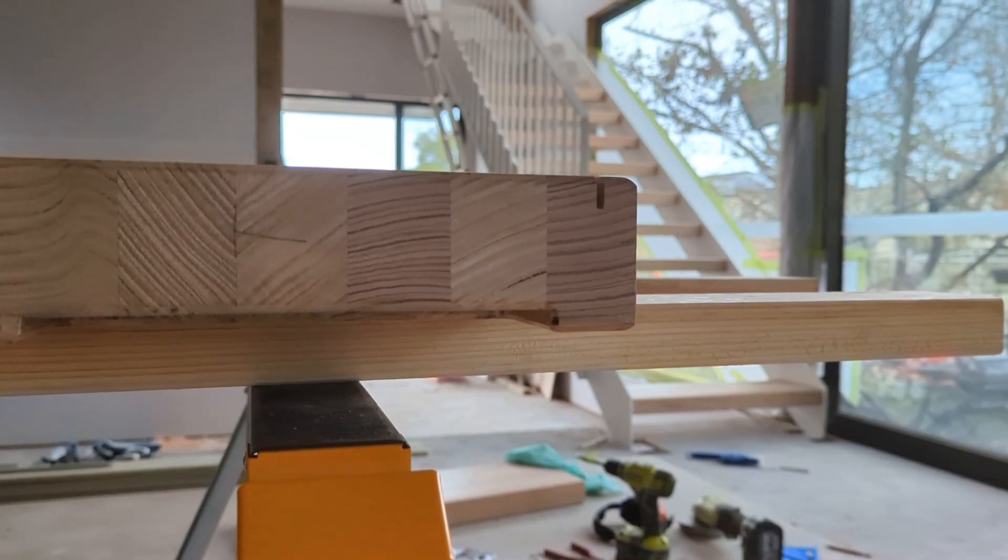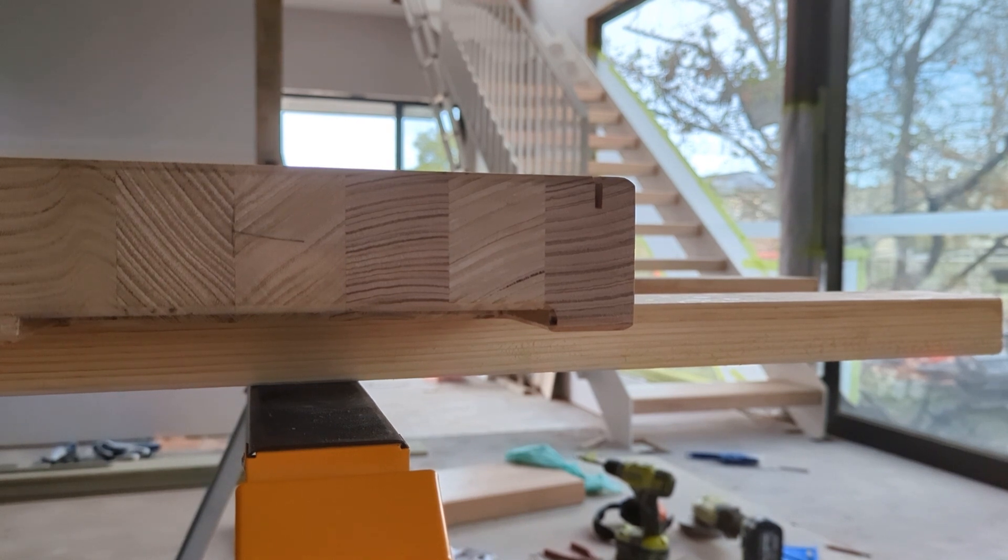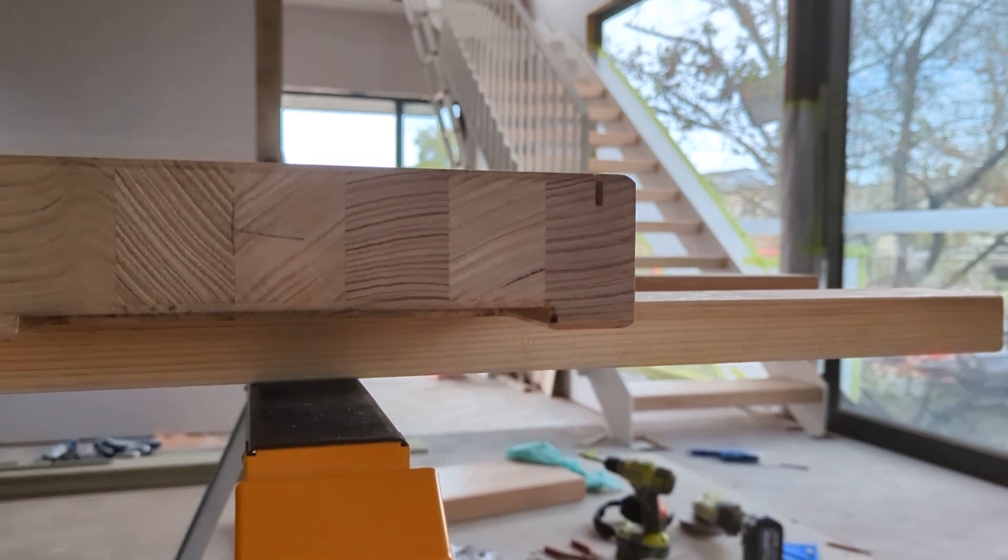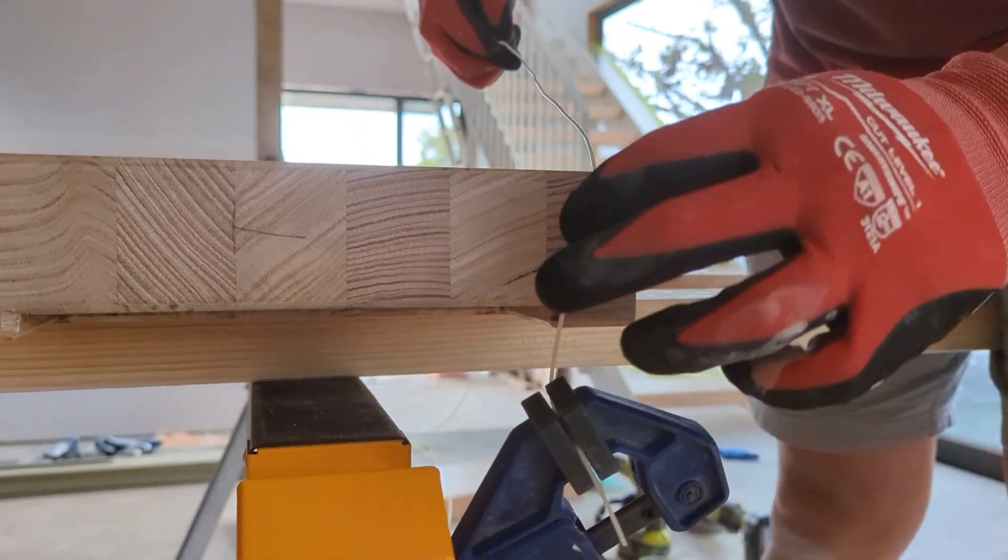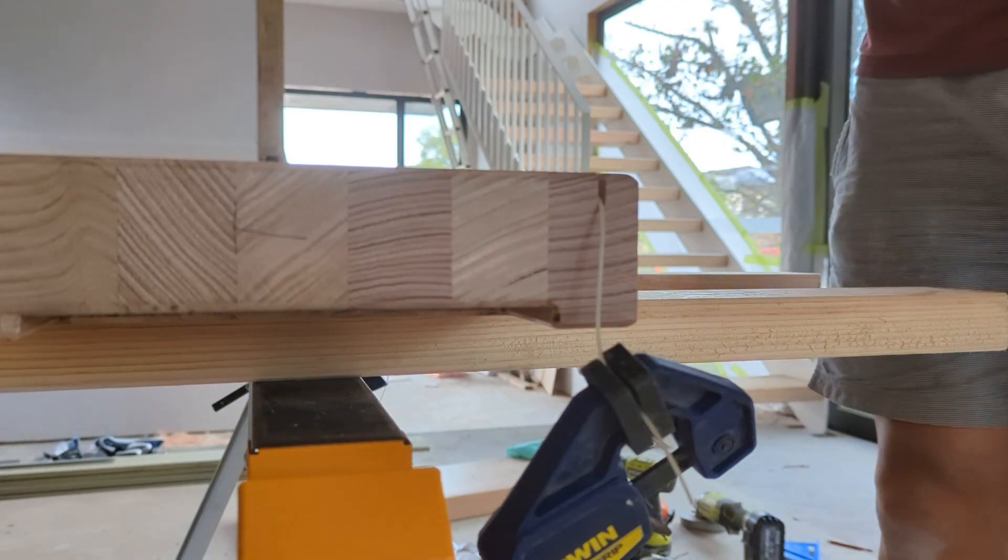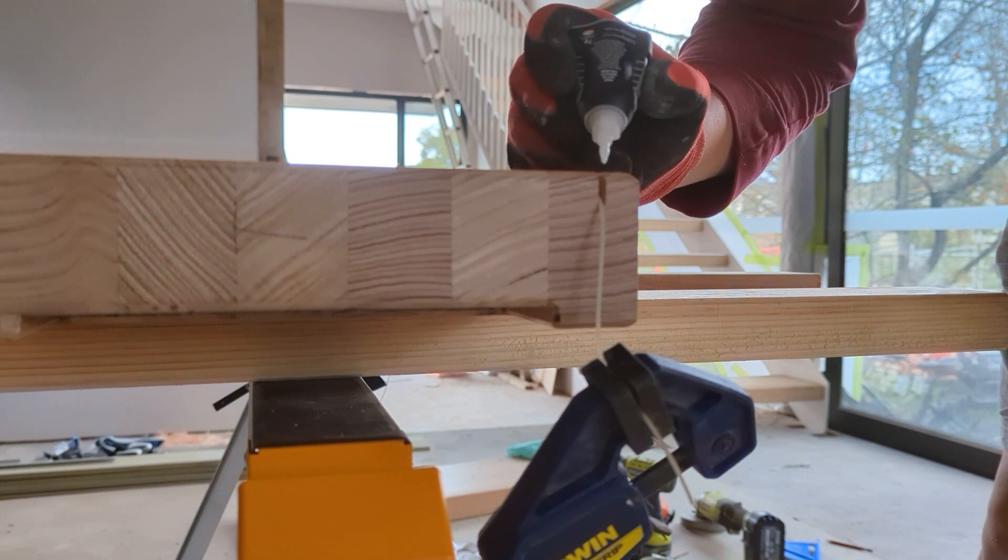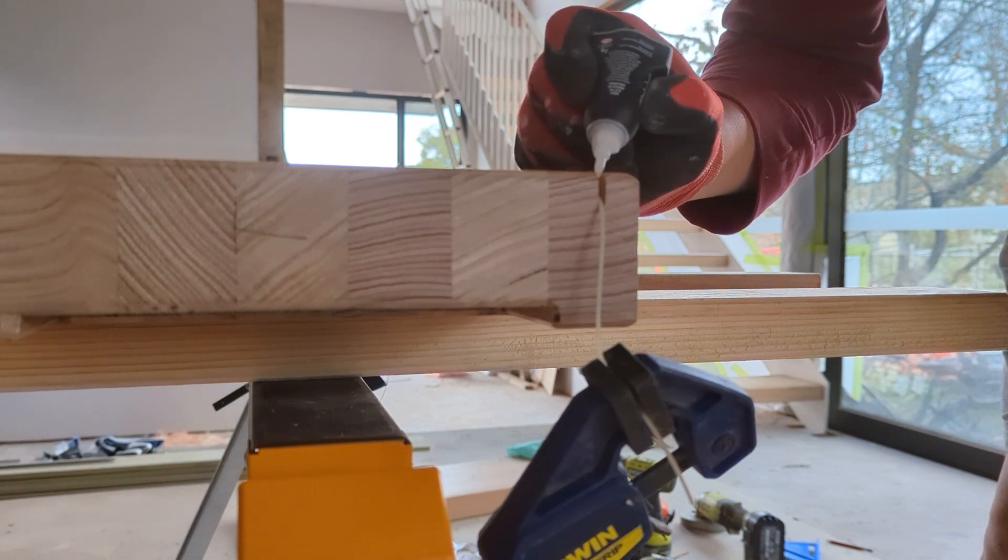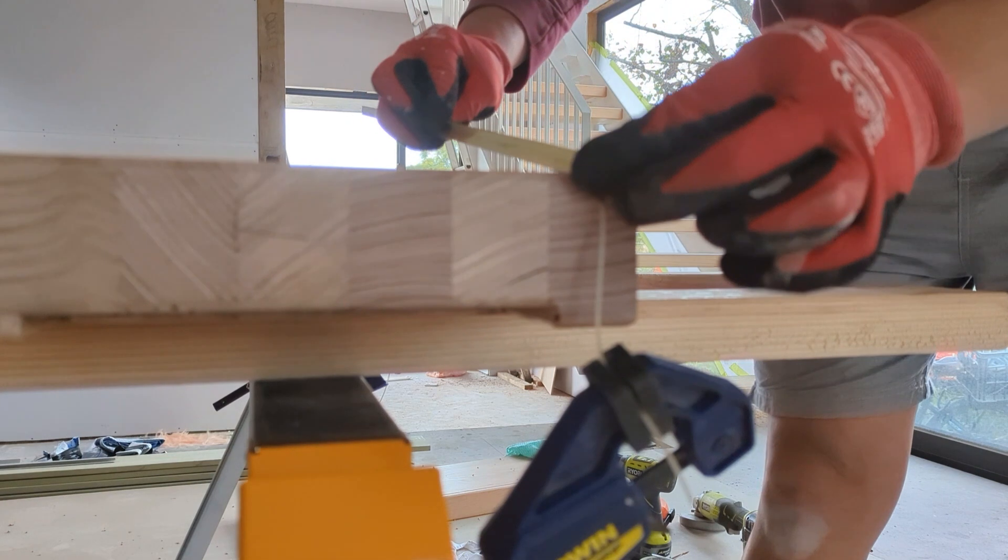To add another level of detail to the timber treads, I wanted to install these brass inserts into the nosings of each of the timber treads. Here what I've done is I've routed the nosing of each of the timber treads just enough to receive the brass flat bars.